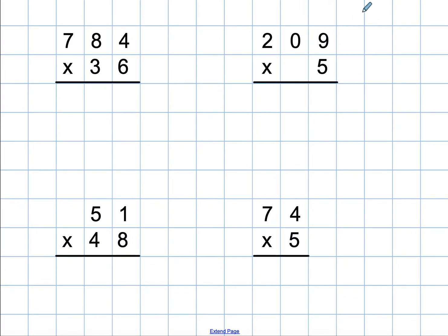So when I estimate 209 times 5, I would estimate it as 200 times 5. 5 times 2 is 10, and then 2 zeros. So I'm estimating it's going to be a little more than 1,000.